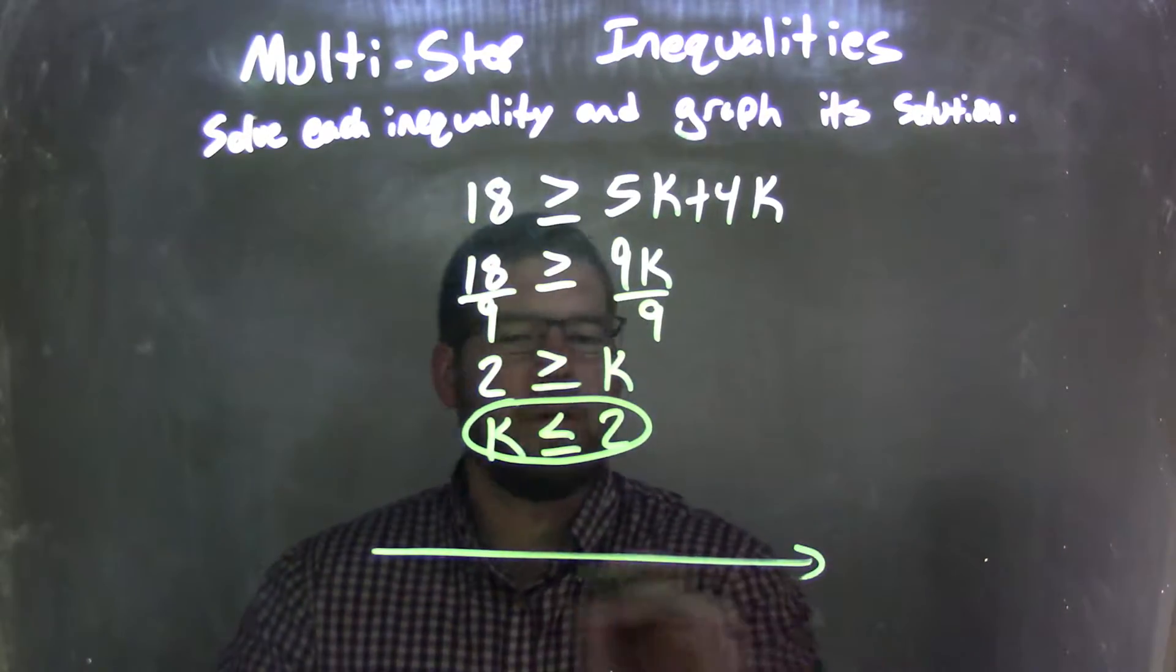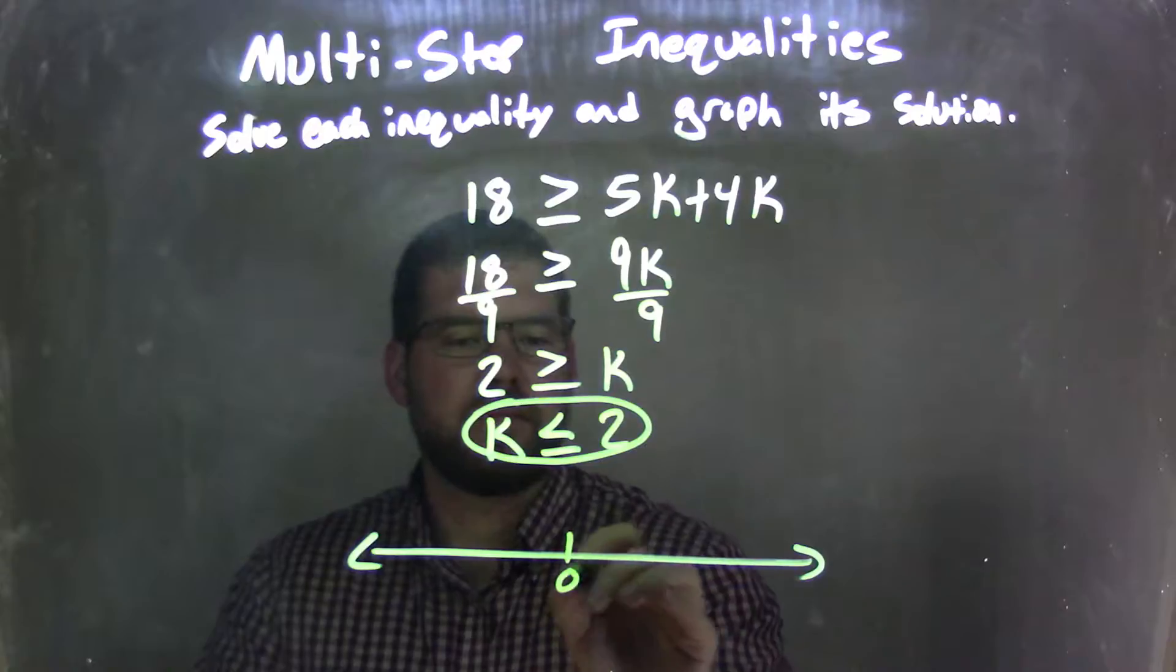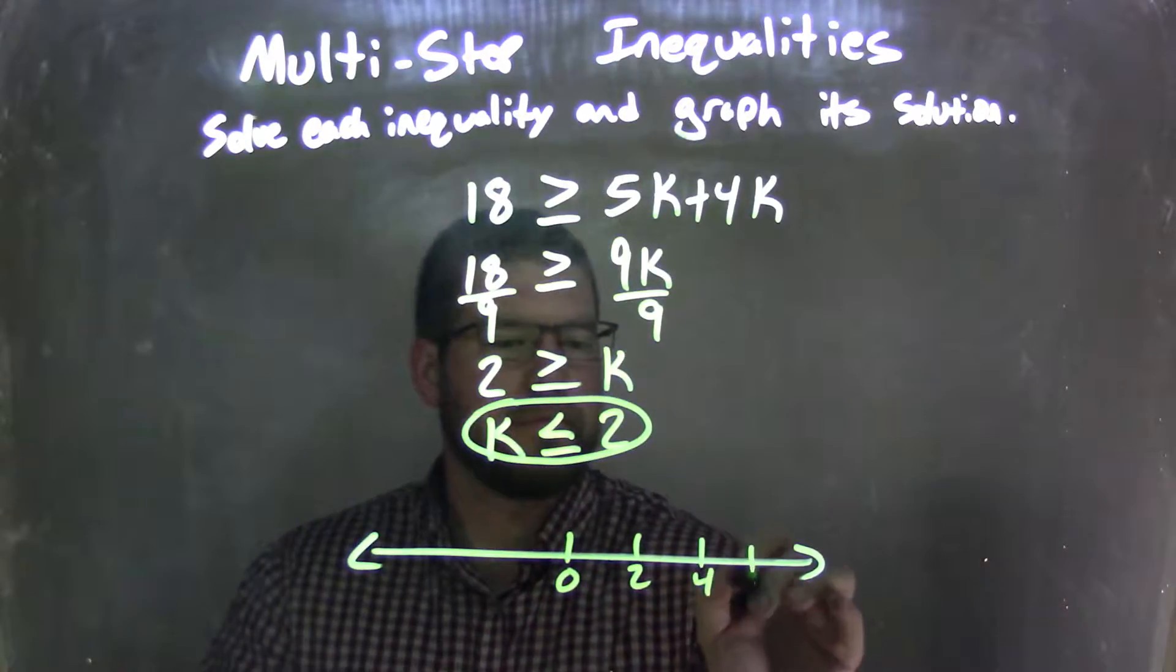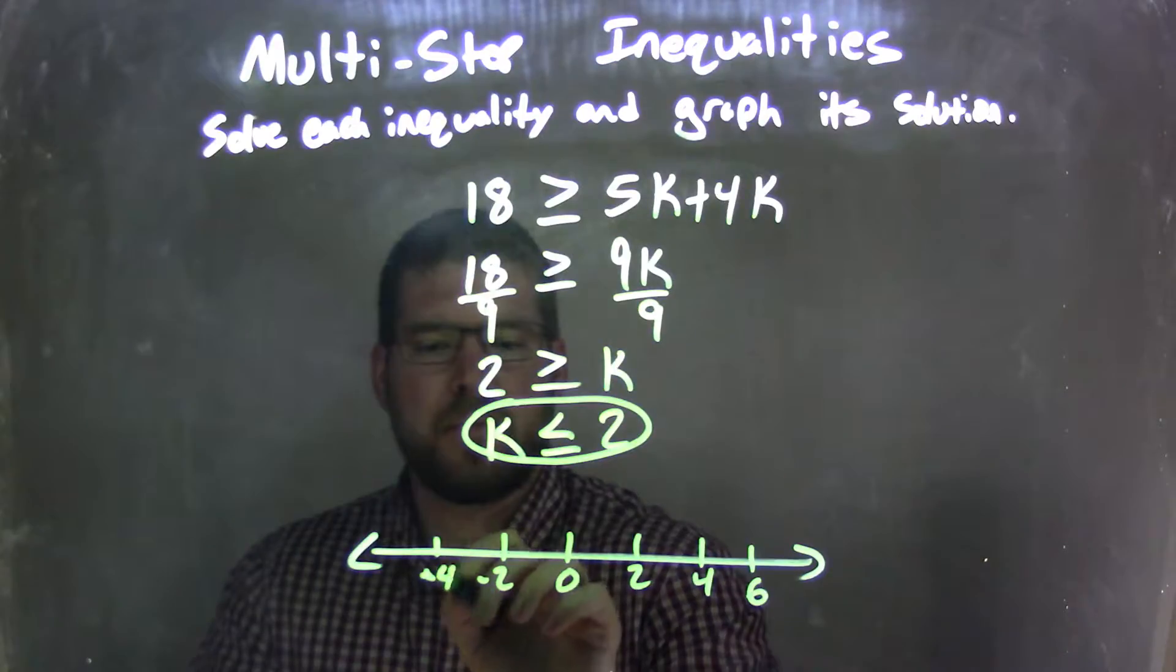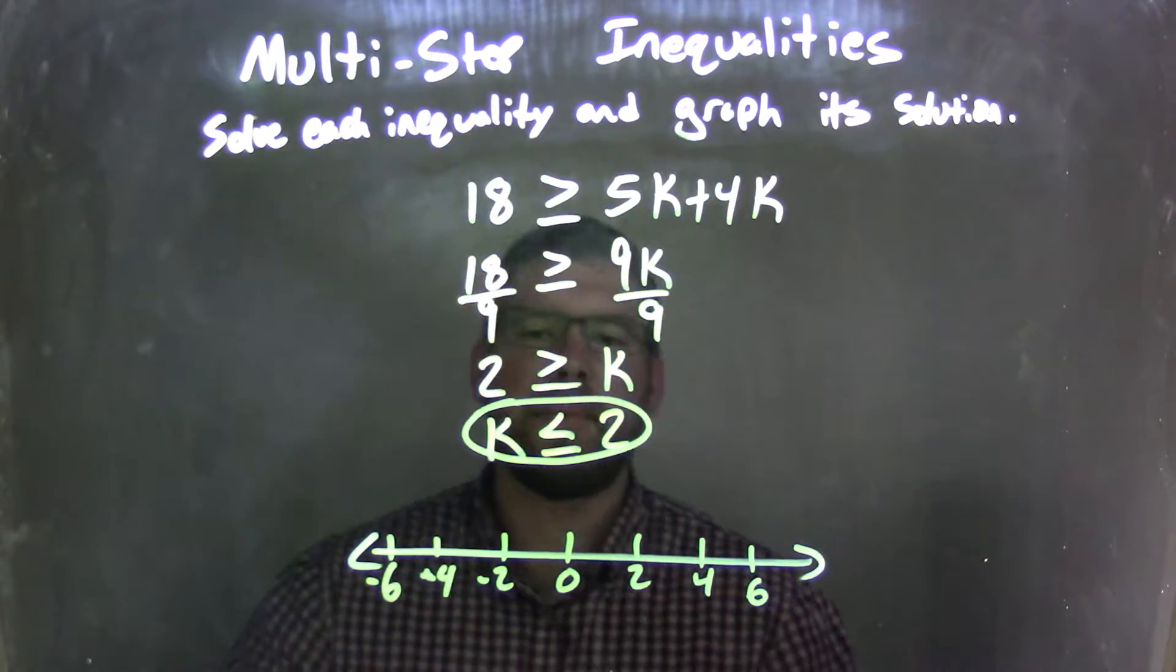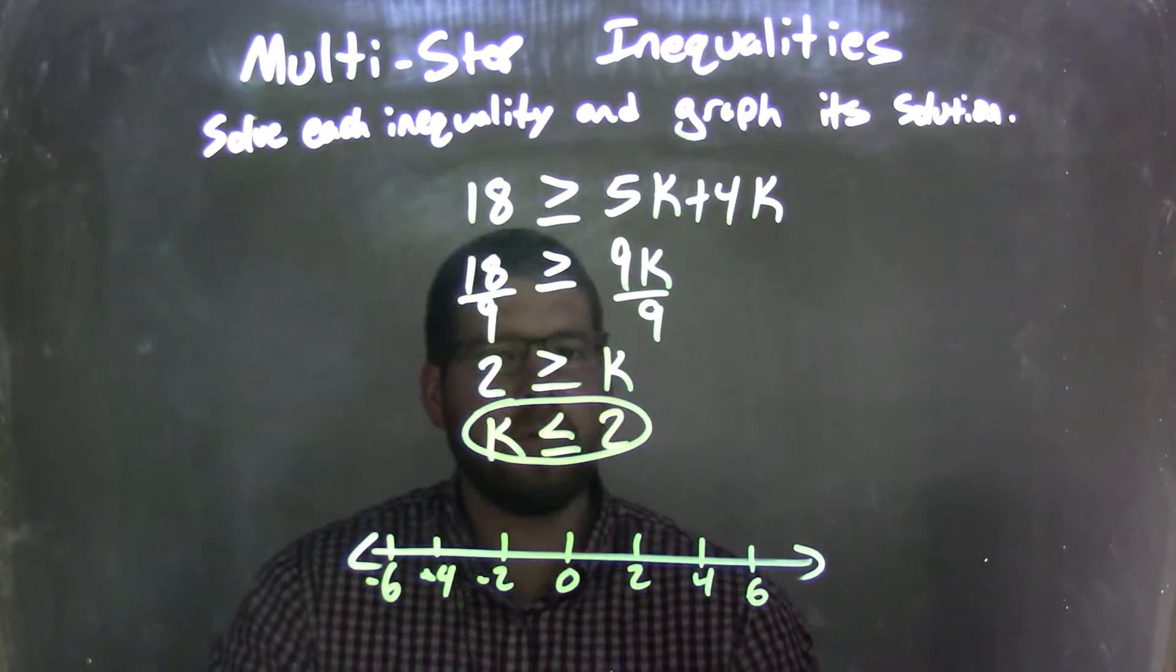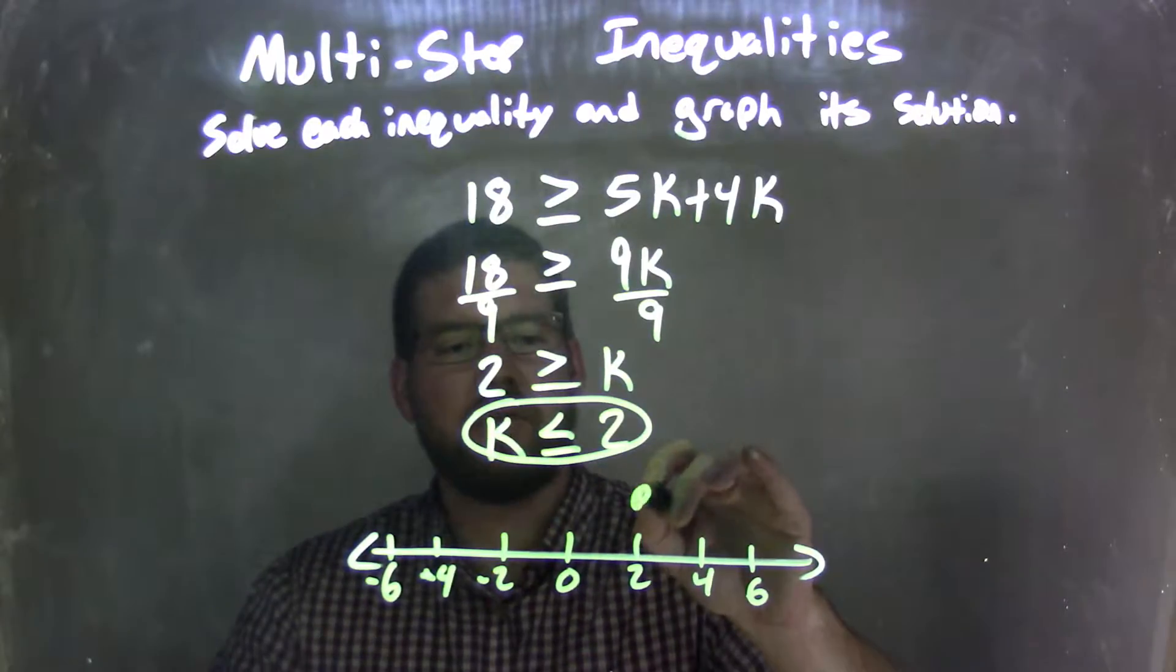So now let's go graph this. Let's go by 2's. Negative 6. So k is less than or equal to 2. So it's equal to 2. I have a closed circle at 2.